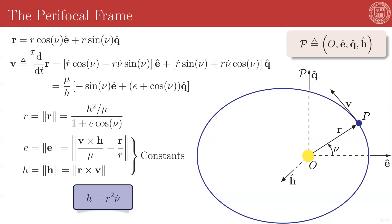And so we get our usual polar component form: r cosine nu in the e-hat direction plus r sine nu in the q-hat direction. If we differentiate this to get the velocity vector v, we will get this expression here, and this can be simplified. To get to this result, we can differentiate the scalar r equation as derived here.